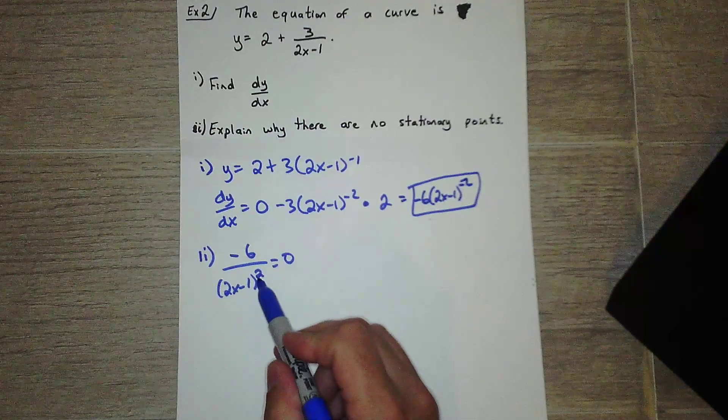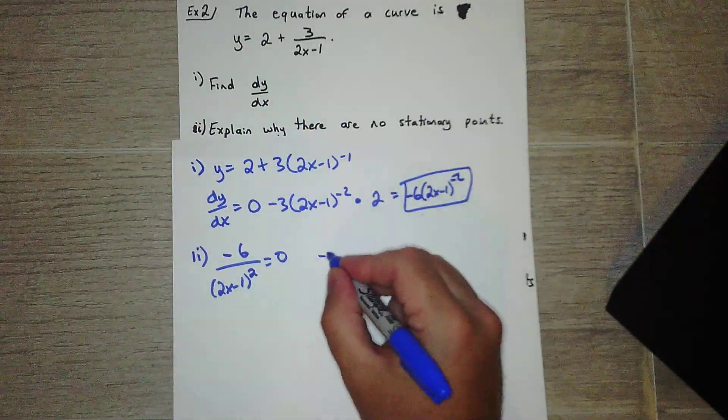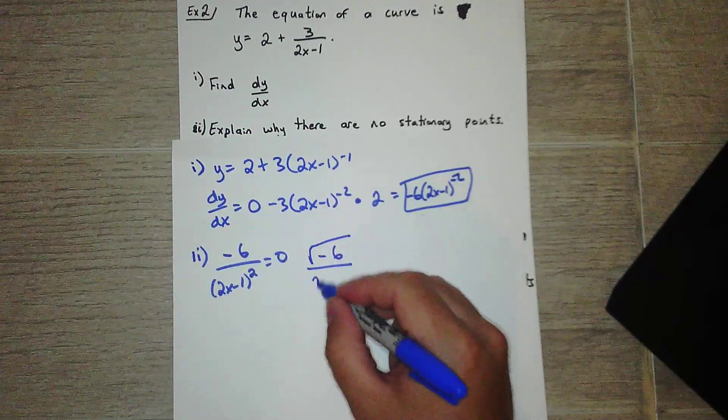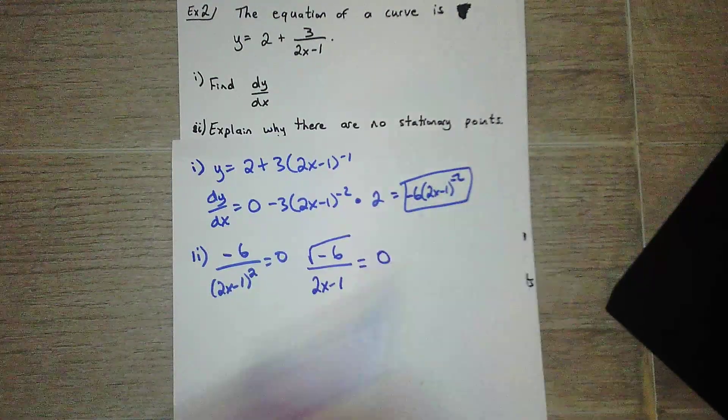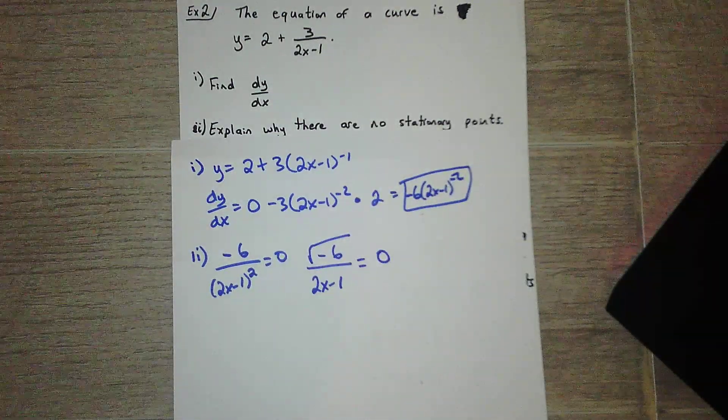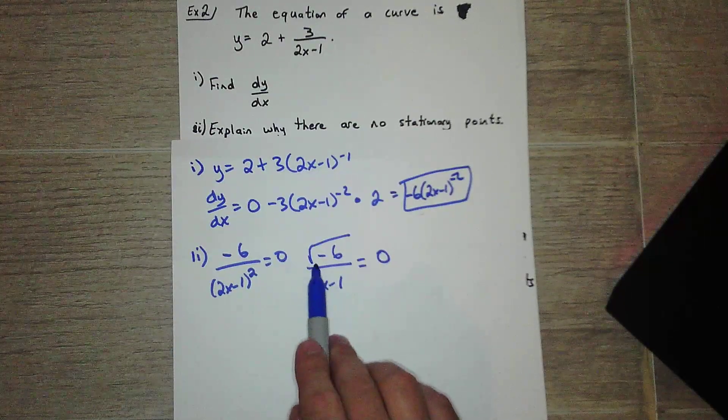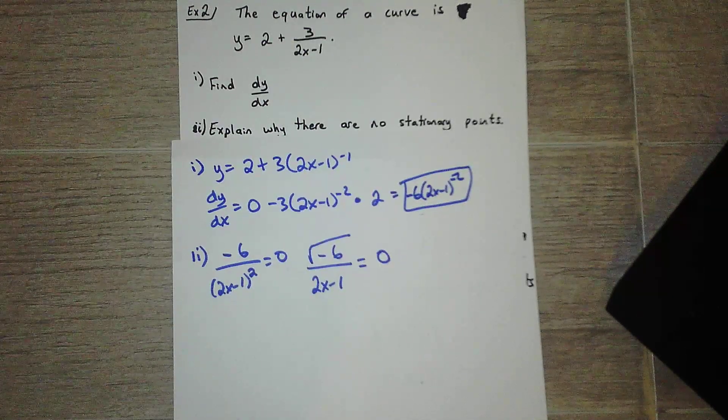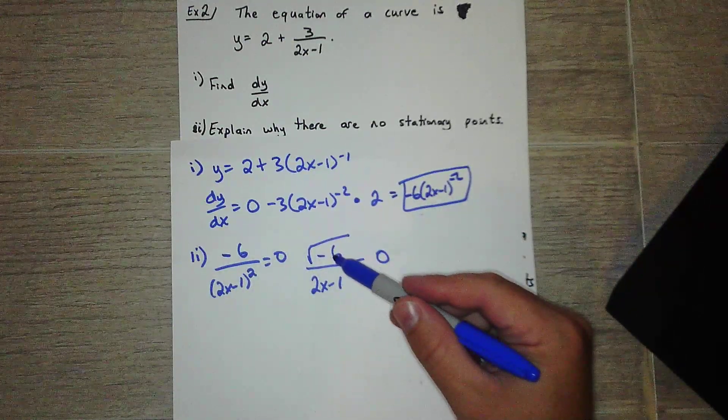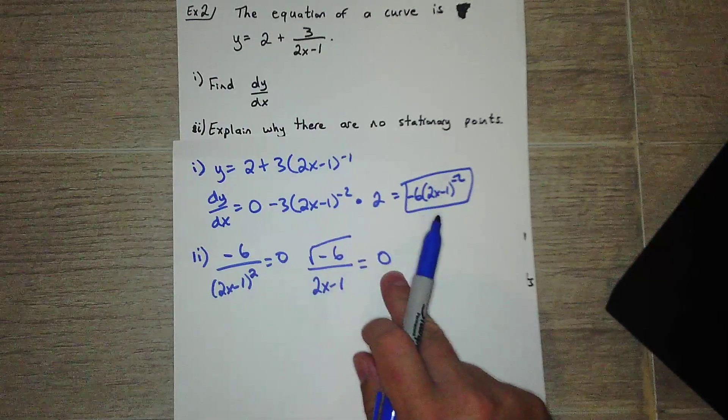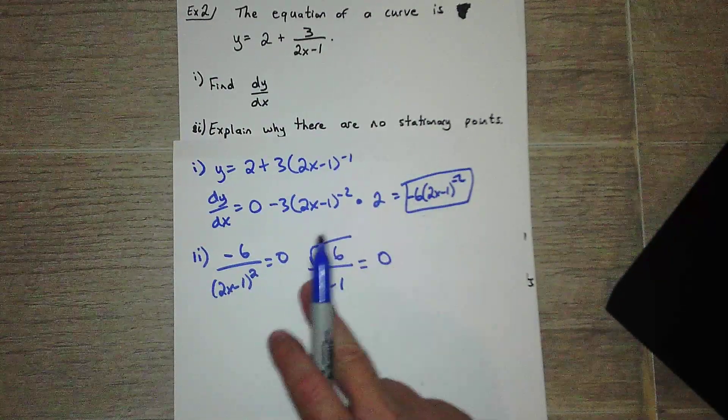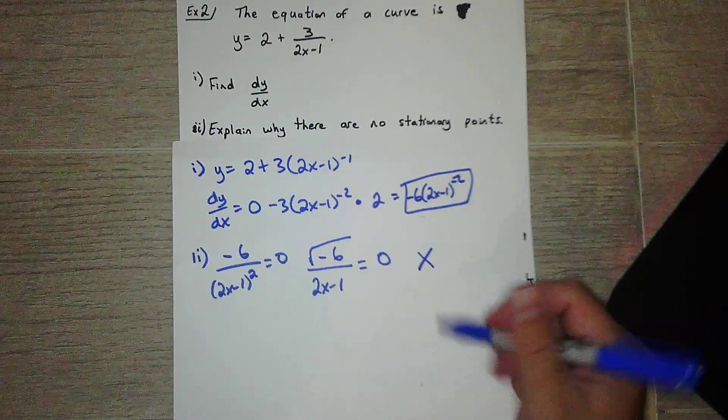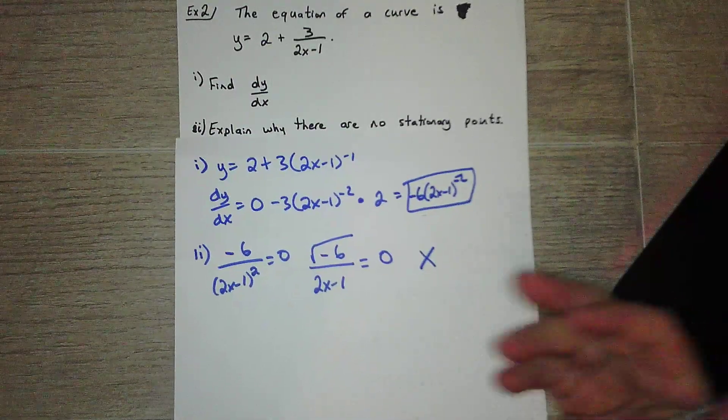So to get rid of this square, I'm going to take the square root of each side. That means I get the square root of negative six. 2x minus 1 equals the square root of zero, which is zero. And you can pretty much stop right there because you cannot take the square root of a negative number. Even if this was a positive six and I multiplied this over, anything times zero is zero. I would have the square root of six equals zero, and that's not true either. So there are no stationary points because this can never equal zero. It just cannot be solved.